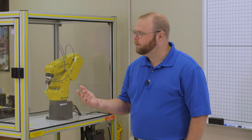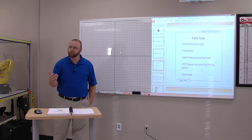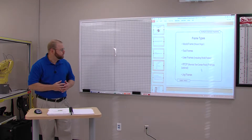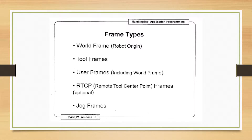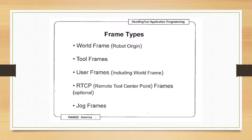Today we'll be primarily focusing on establishing a tool frame. The world frame is the robot origin — it is set from the manufacturer and cannot be changed by the user. Tool frames and user frames are frames we can define as users. The RTCP, or remote tool center point, we won't be using in this class. These are the frame types that we can set up, with the exception of the world frame — that is the robot's origin and we can't change it.